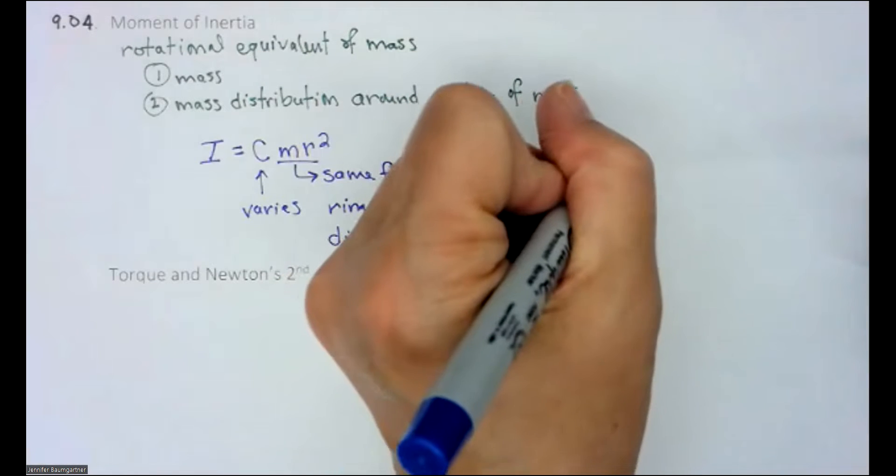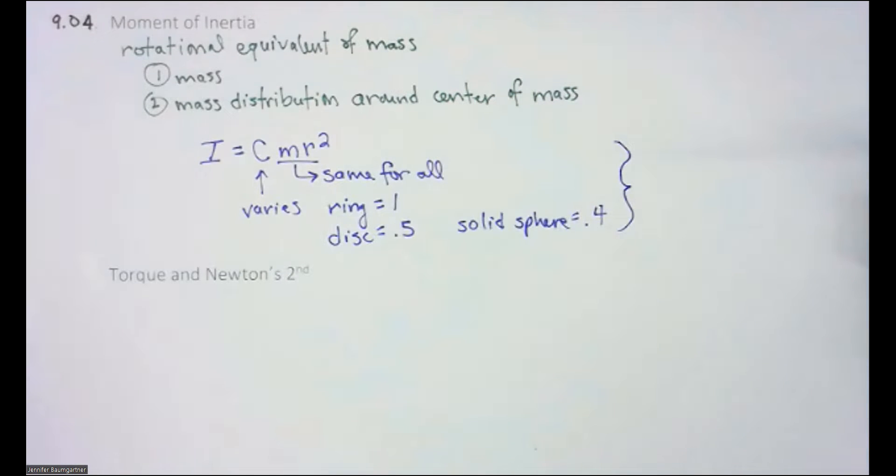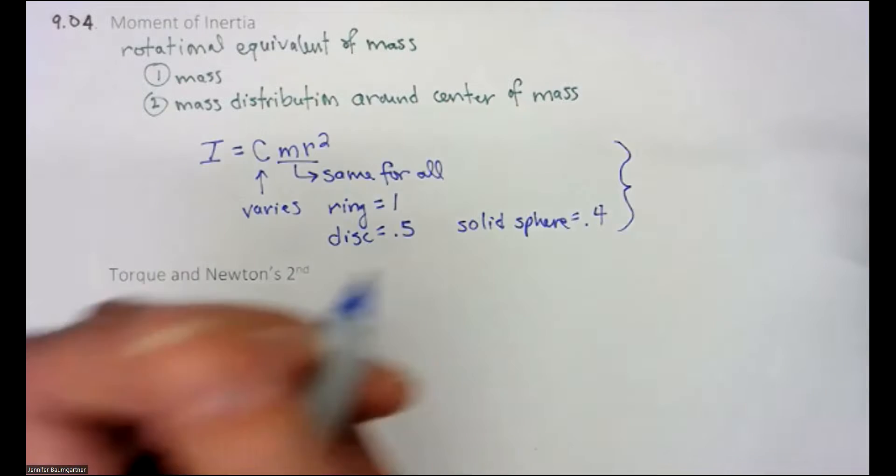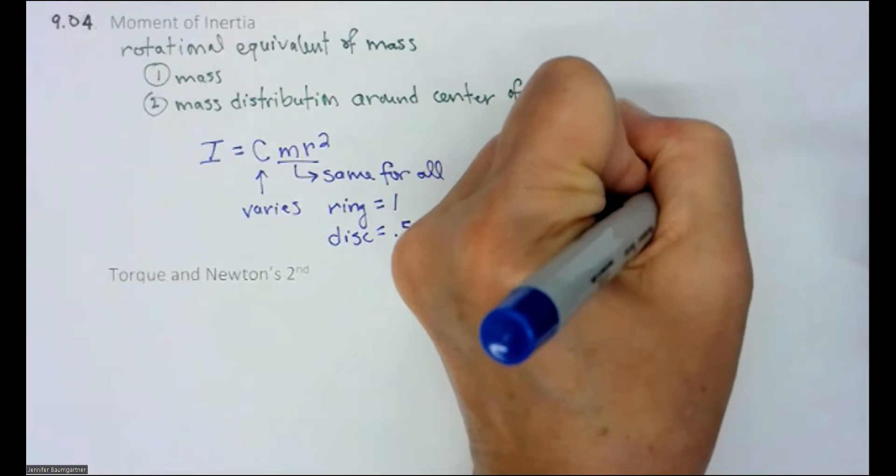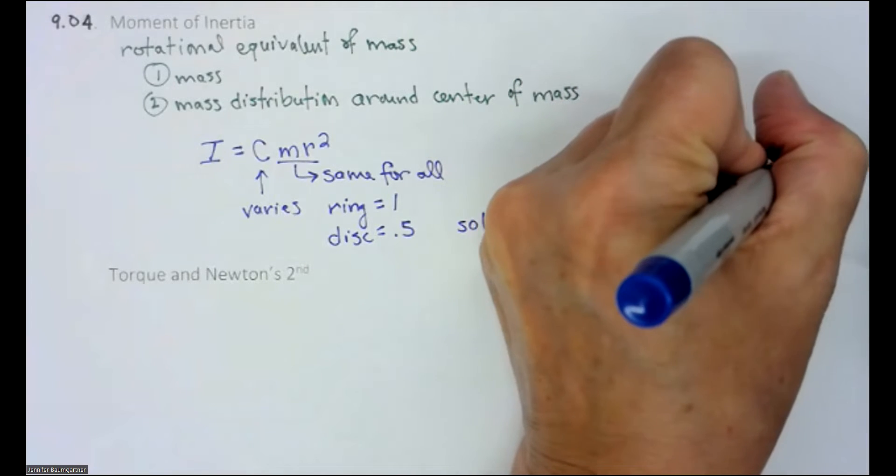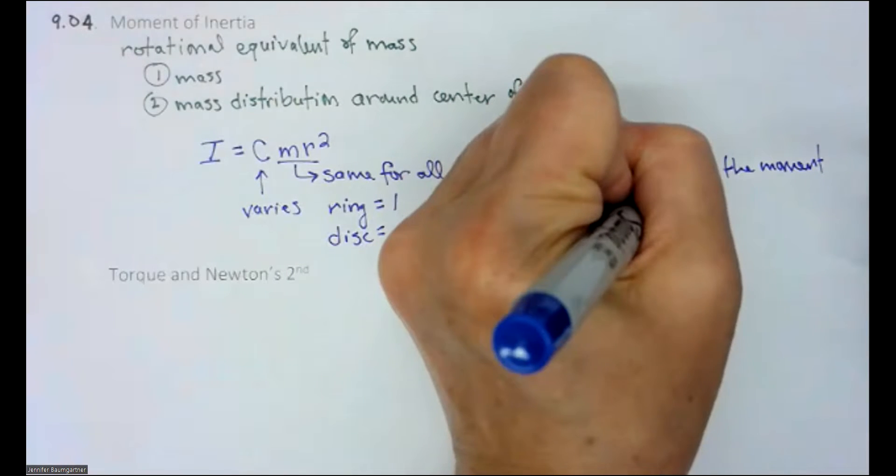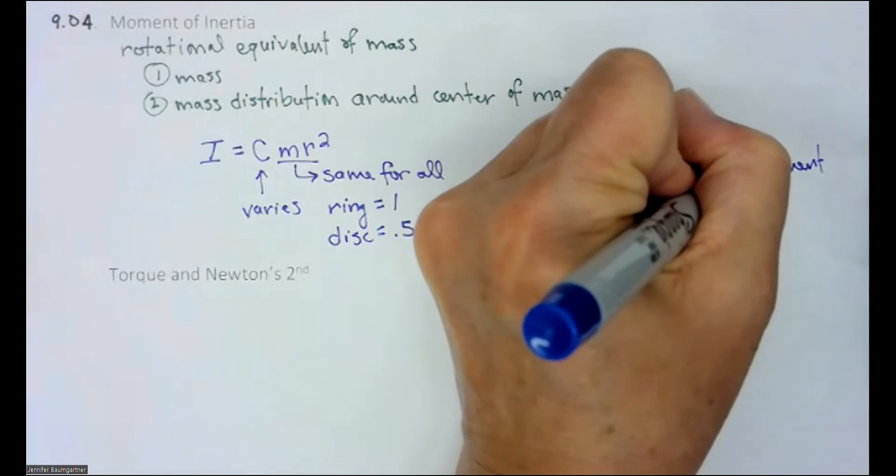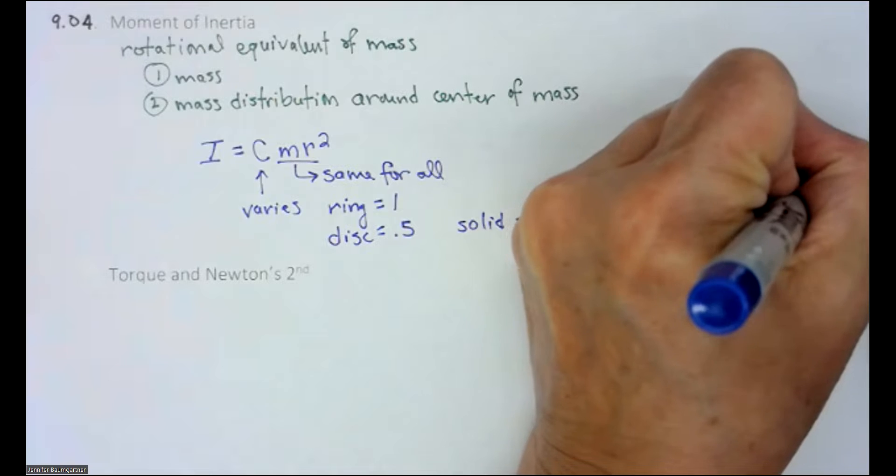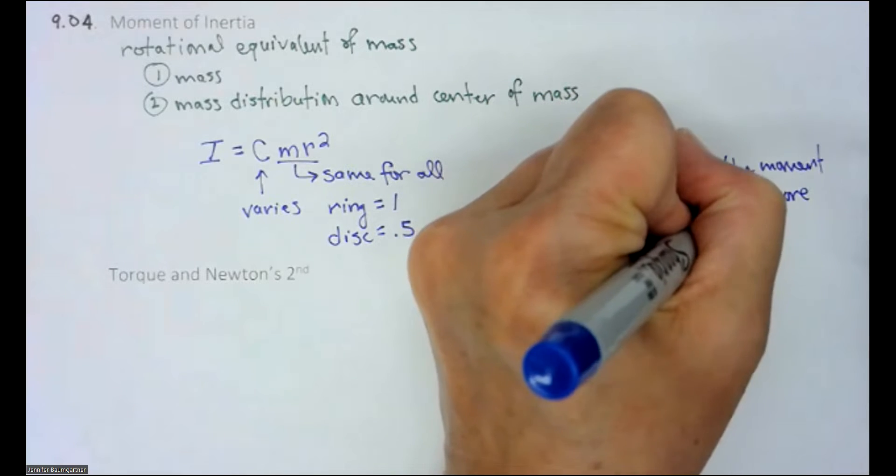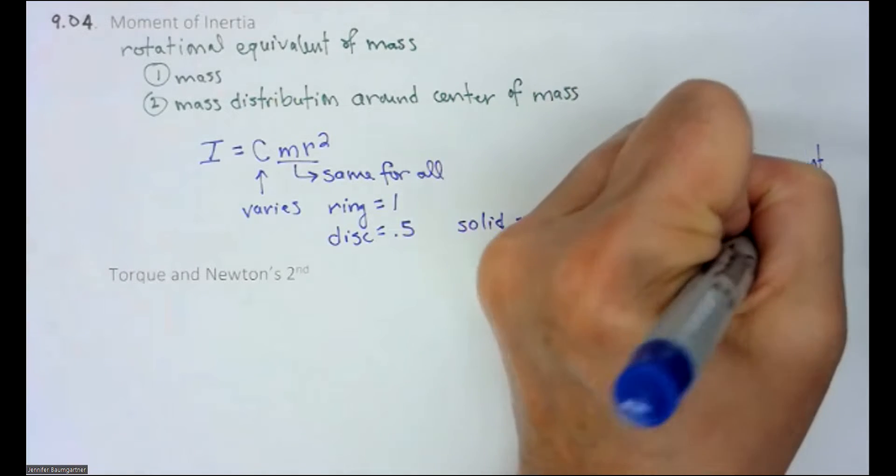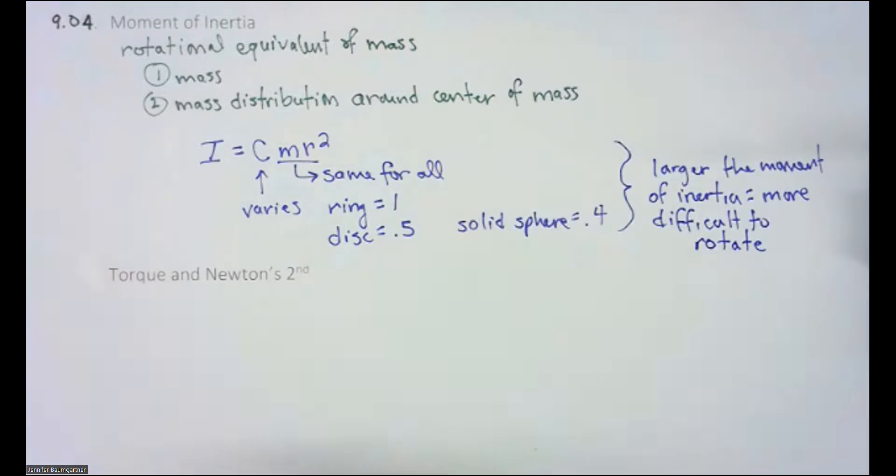So what does that mean? If I have a larger moment of inertia, the takeaway here is that a larger moment of inertia is more difficult to rotate. And if you think about it, back when we talked about inertia in a straight line, we said if you were running through the woods and there was a moose chasing you, you should zigzag because it's going to be harder for the moose to change directions. He has more inertia.